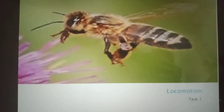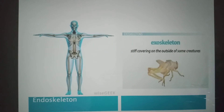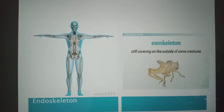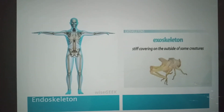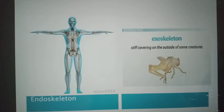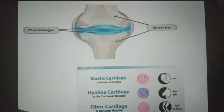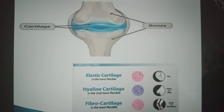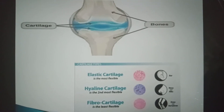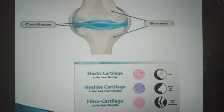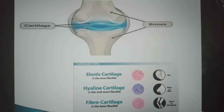To summarize, I have discussed about locomotion, endoskeleton and exoskeleton — you can observe the stiff covering on the outside of some creatures. I also discussed about cartilage and bones: elastic cartilage, hyaline cartilage, and fibrocartilage, also known as fibrous cartilage.